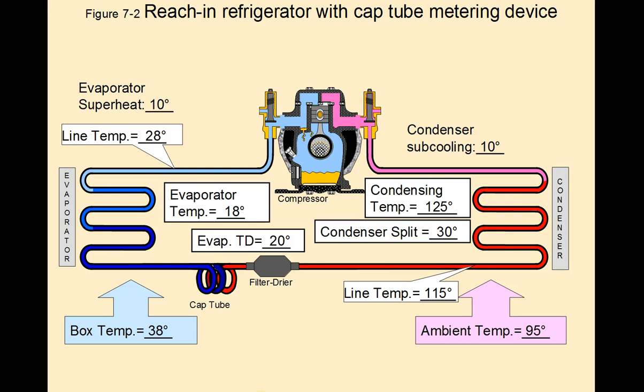So here we have a 95 degree ambient with a line temp of 115 degrees, and if you notice, the condenser split is 30 degrees, and the condensing temperature is 125 degrees, and the subcooling is 10 degrees, which is pretty much in line with the TXV or TEV system. The condenser splits and the subcooling are measured the same way as you do it in any other system.